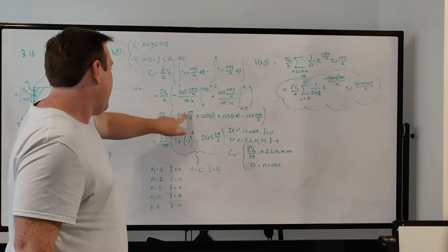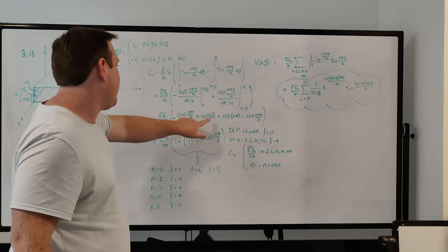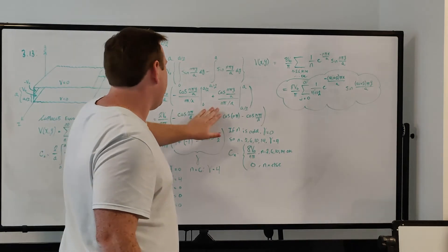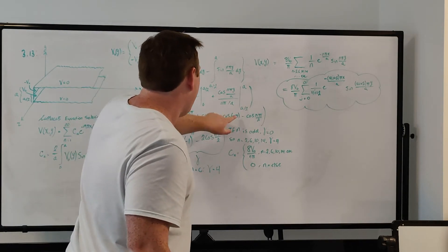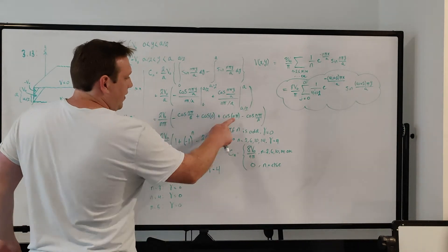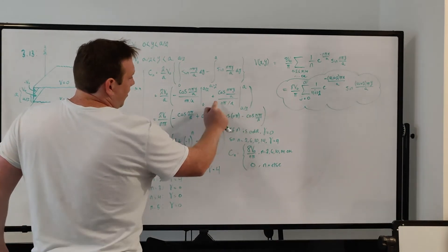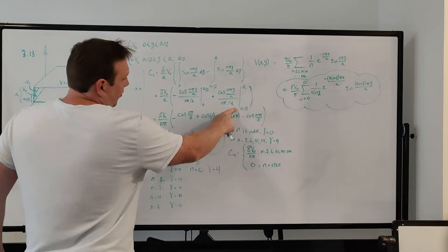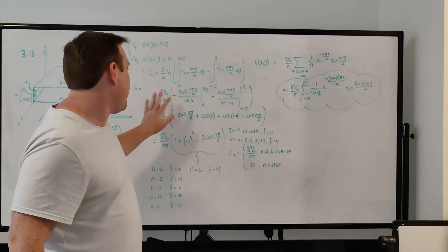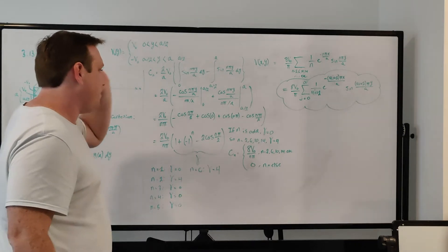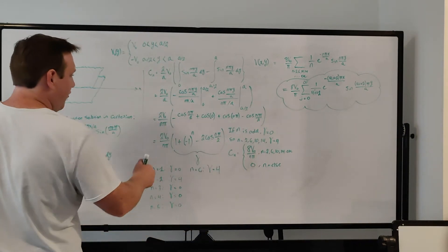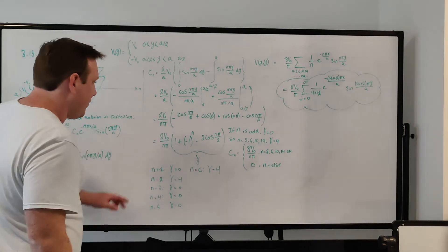So we have minus cosine of n pi over 2 plus cosine of 0. Then for the second term, we have plus cosine of n pi when we plug in a, and then minus cosine of n pi over 2 when we plug in a over 2 for y. So we have the constants 2 V-naught over n pi times — cosine of 0 is 1 — and then minus 2 cosine of n pi over 2, plus cosine of n pi.